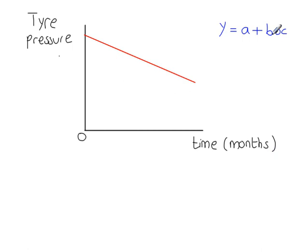b is the gradient. a is the y-intercept. So that's the value a right here. So what's the significance of the value a in this context? Now a is equal to the initial tyre pressure.